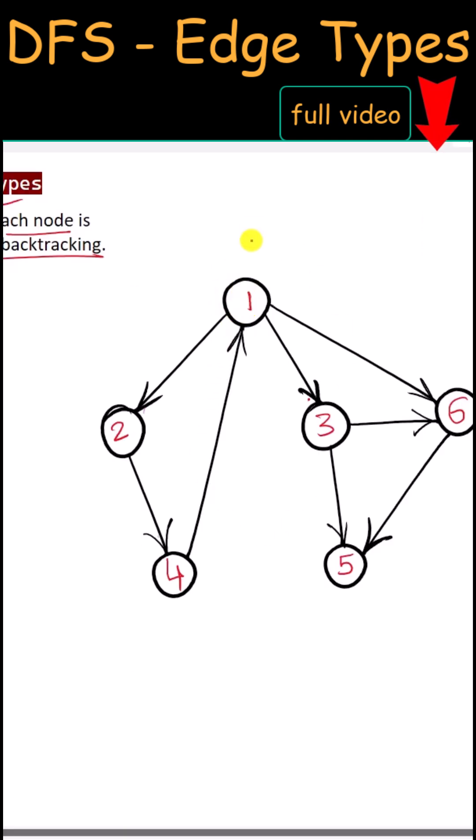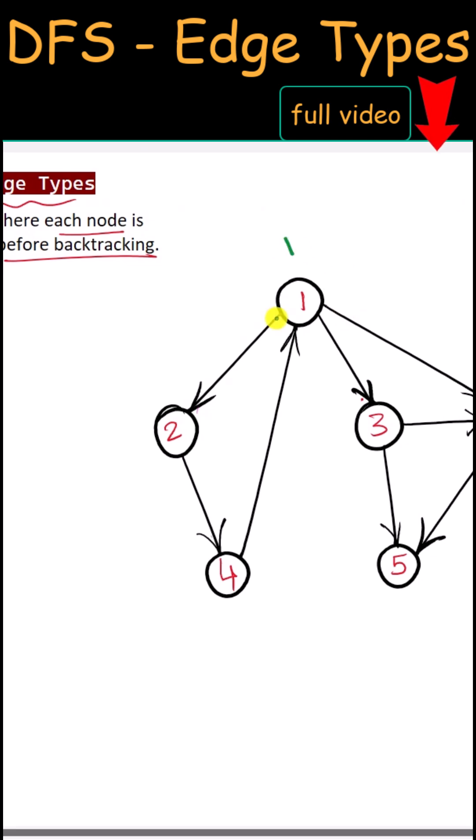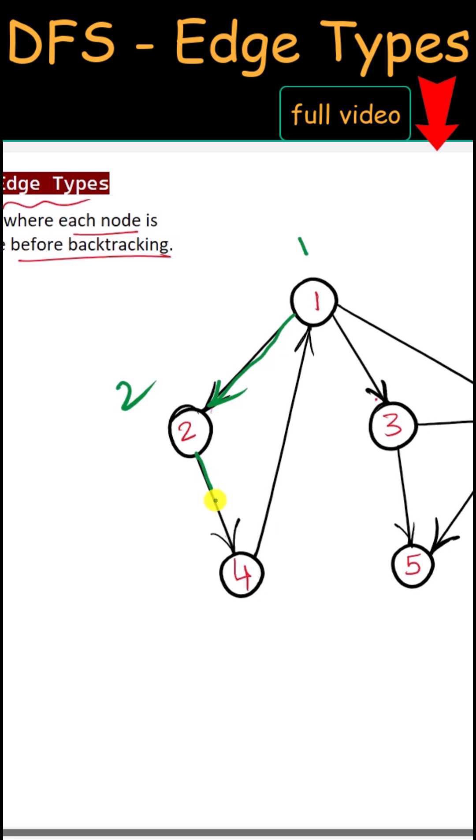Here we have the graph. Suppose we started the traversal from this node 1, so the starting time will be 1. Then we're gonna traverse node 2, so it will have starting time of 2. Then we're gonna visit 4, so starting time is 3.